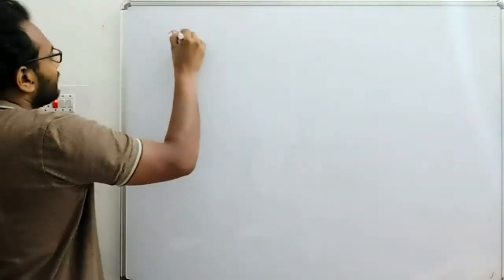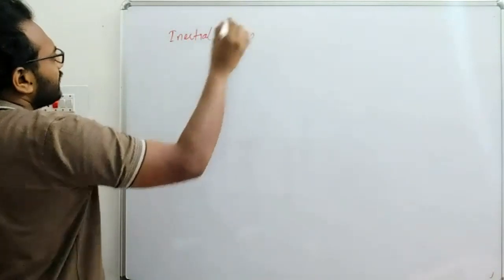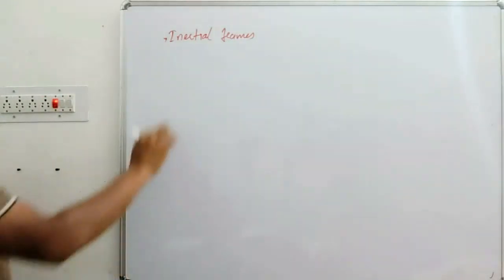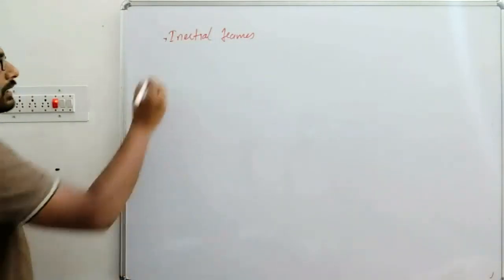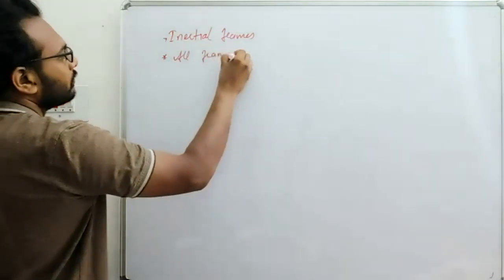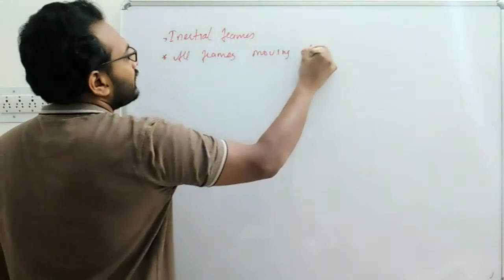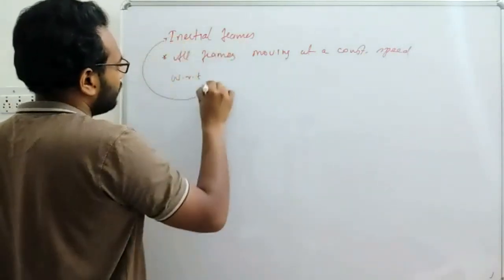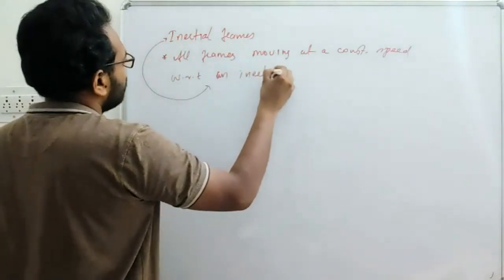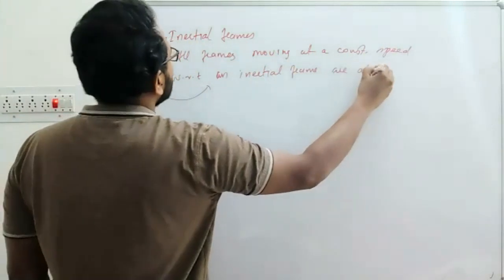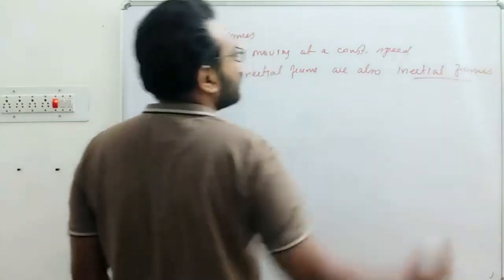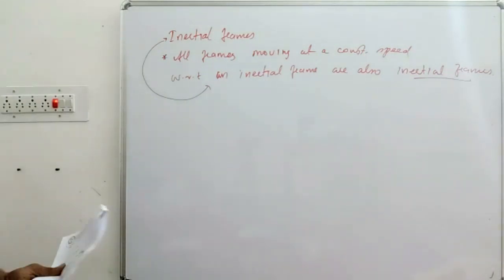Once we have identified one inertial frame, we know there are infinitely many other inertial frames, because all frames moving at a constant speed with respect to the identified inertial frame are also inertial frames. The next question is: how do you connect the coordinates between different inertial frames?